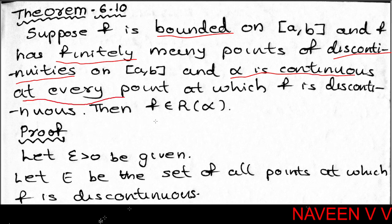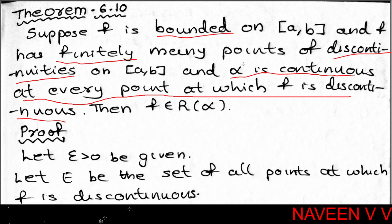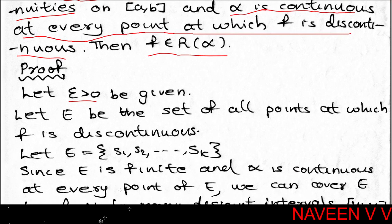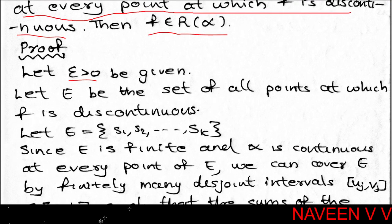Suppose f is a bounded function on [a, b] with finitely many points of discontinuities. Alpha is a monotonically increasing function on [a, b], and alpha is continuous at all points where f is discontinuous. Then f is Riemann-Stieltjes integrable with respect to alpha over [a, b]. To prove this, we use Theorem 6.6: given epsilon greater than 0, we need a partition P of [a, b] such that U(P, f, alpha) minus L(P, f, alpha) is less than epsilon.